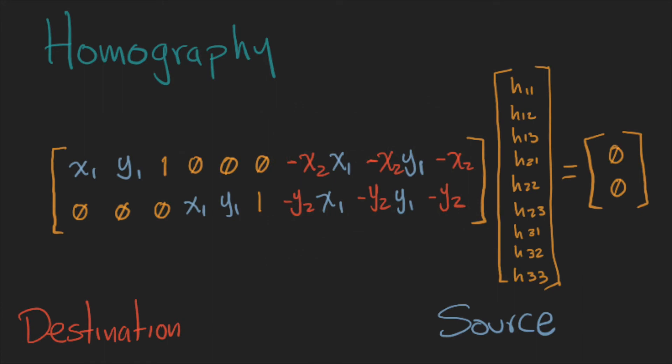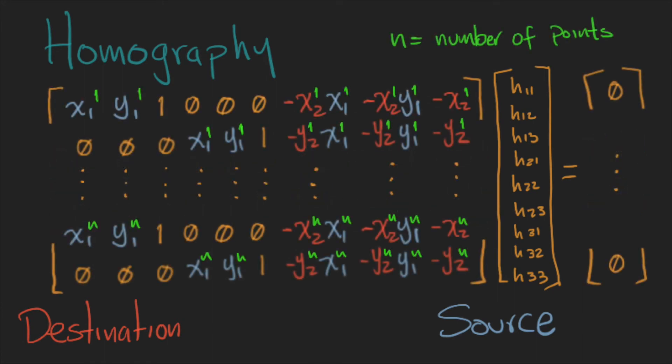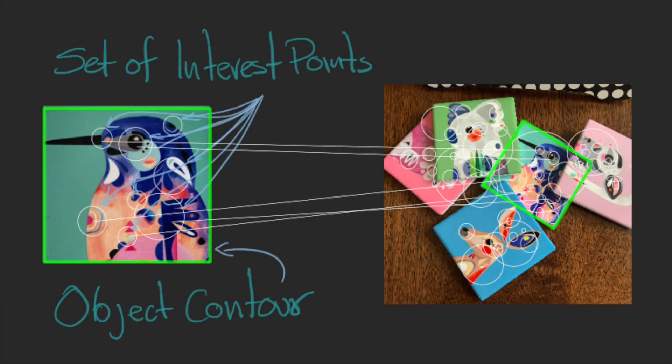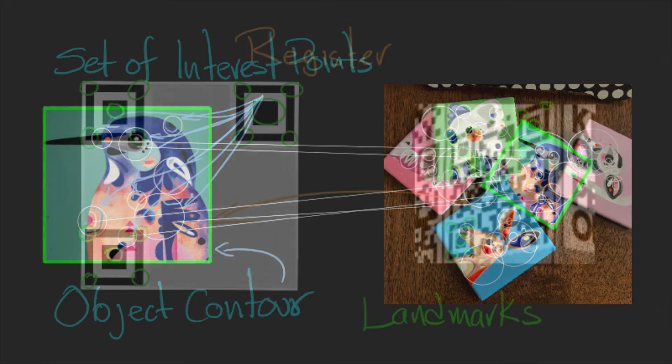This is convenient because the first part of the equation includes all the points in the image that we know. Remember that we will have these points from SIFT or as landmarks, but we know that they are corresponding points between images.